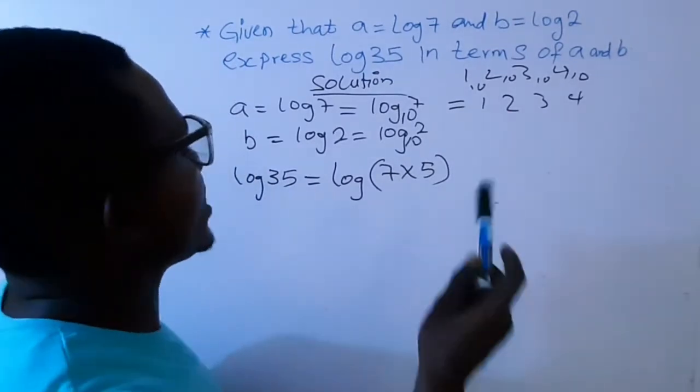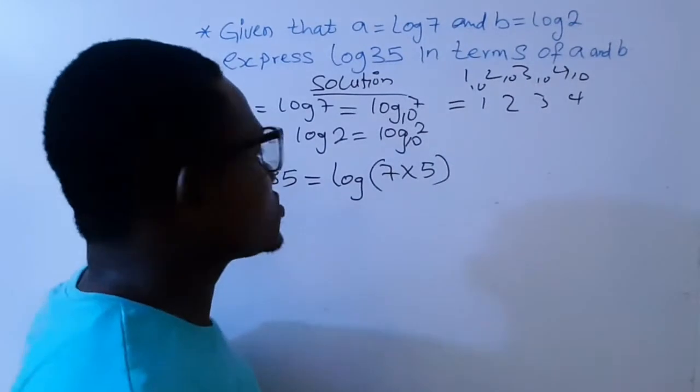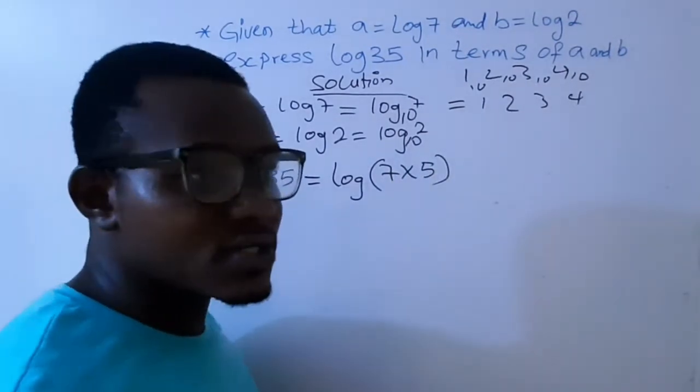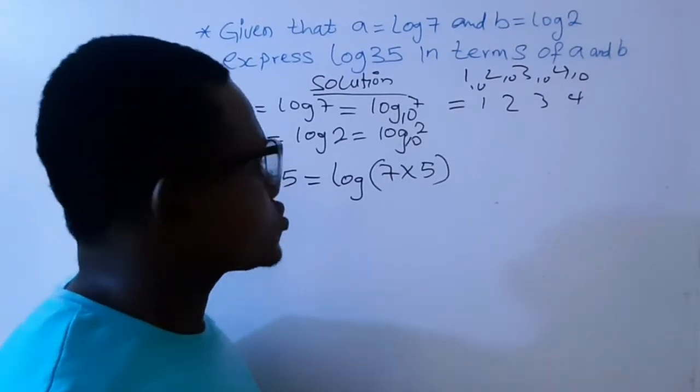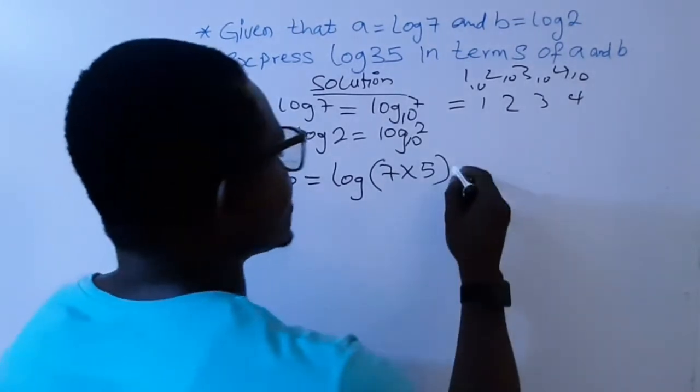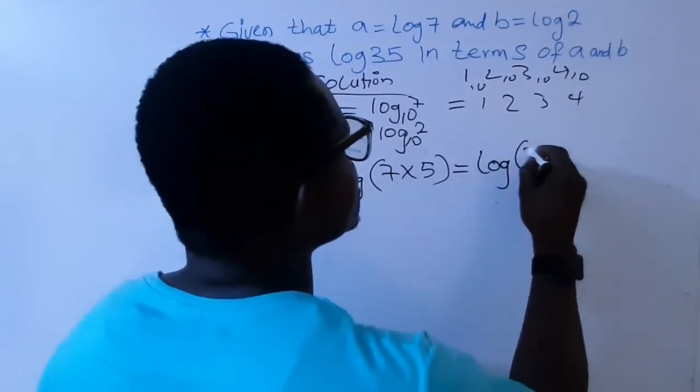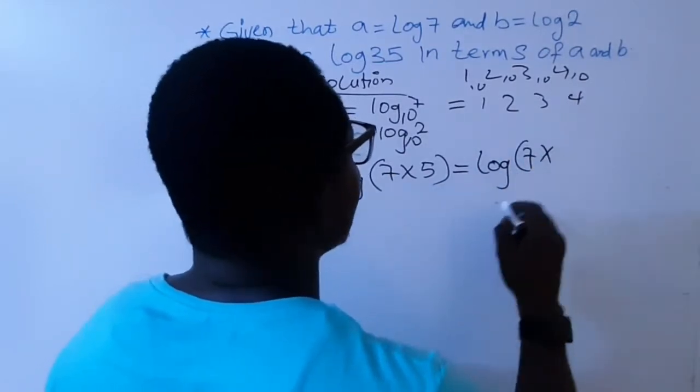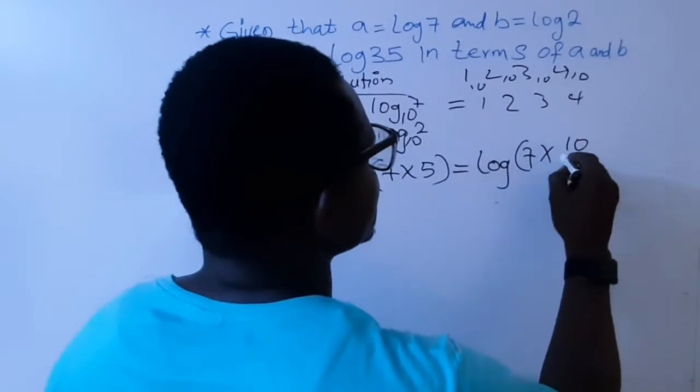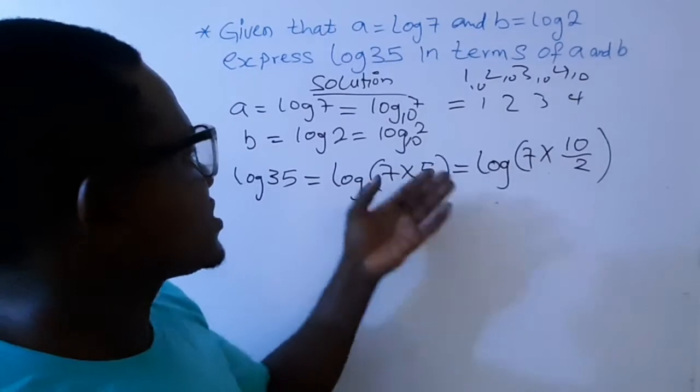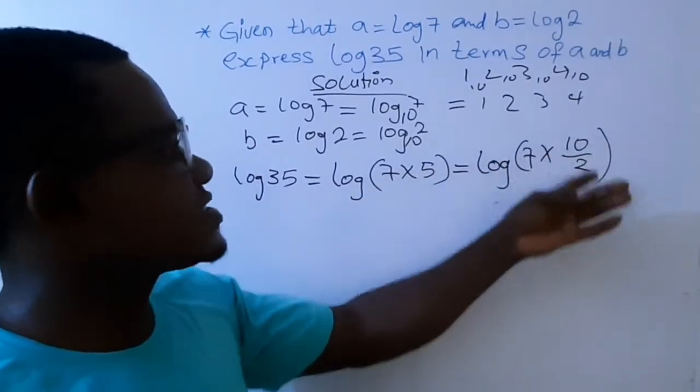Don't forget, we are looking for 7, and we are also looking for 2. So we've got this 7, so we need to now manipulate 5 again for us to get 2. So how can we do that? We can do that by saying log 7 multiplied 10 divided by 2.